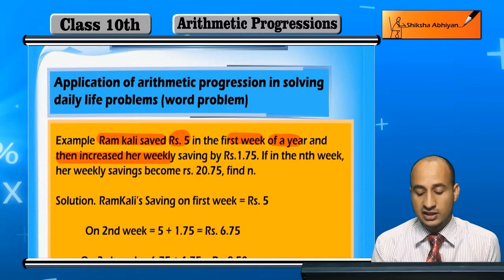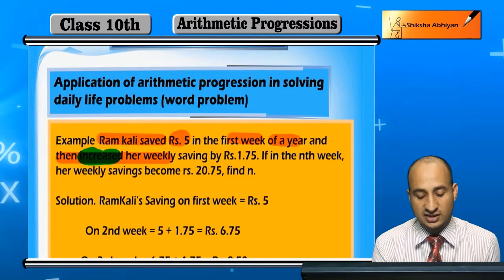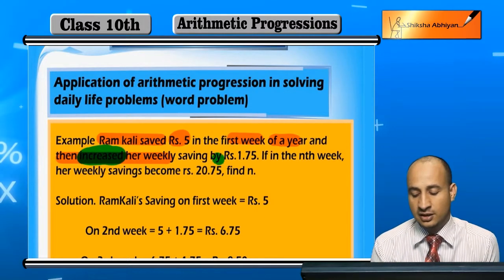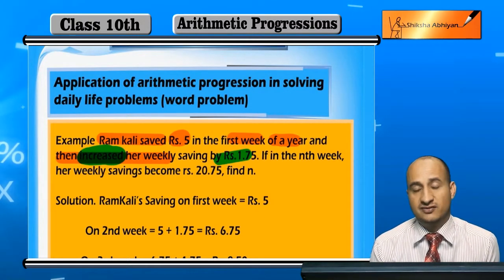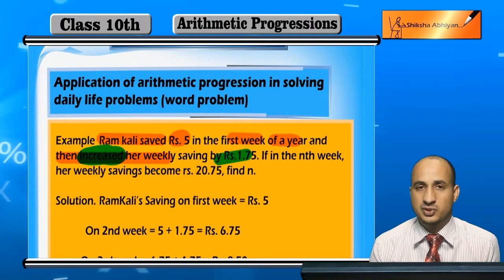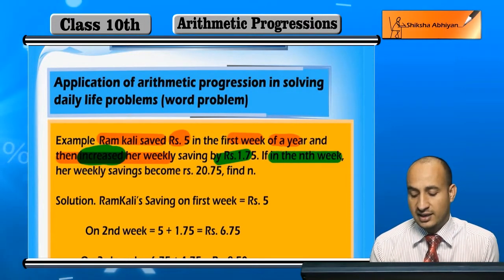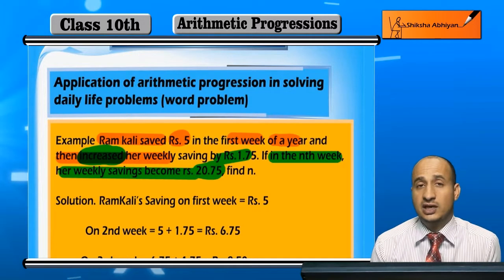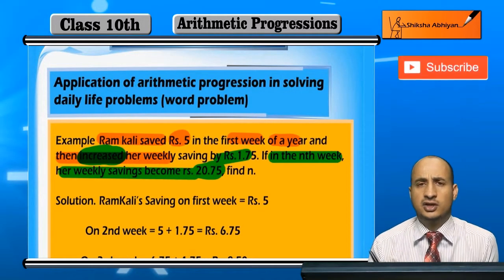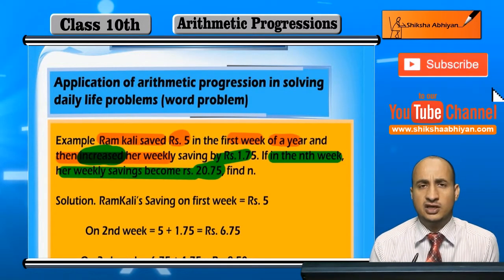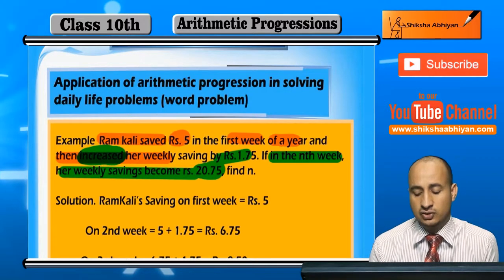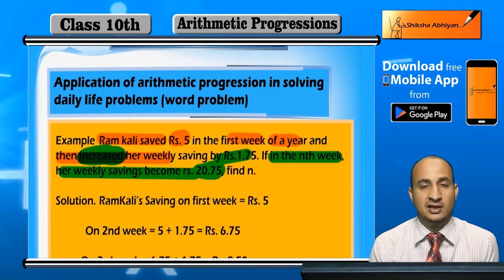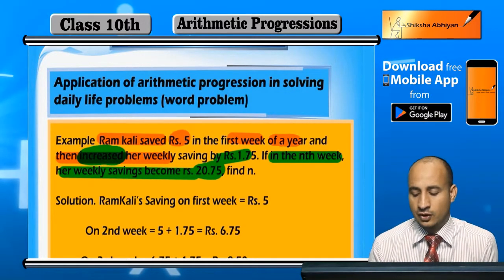She decided to increase her weekly savings by rupees 1.75 each week. So in the nth week, her savings will become rupees 20.75 — this could be the 10th week, 20th week, or 50th week. The saving of 20.75 is our target point.